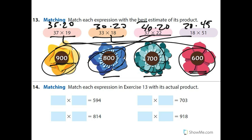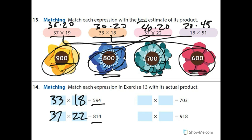Number 13 is going to help us do number 14, because it wants us to match each expression with its actual product. What's close to 600? That's going to be 33 times 18. And then 814 — the closest to 814 is 800, so that's going to be 37 times 22. The 700 is 37 times 19, and 918 is going to be 18 times 51, because it's close to 900.